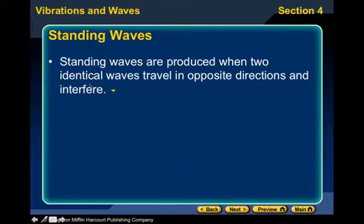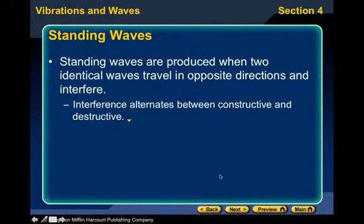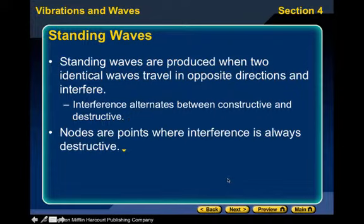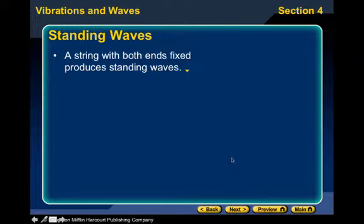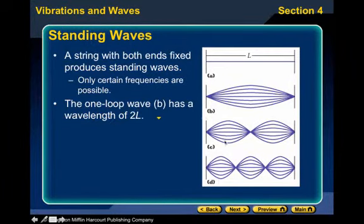Standing waves are produced when two identical waves travel in opposite directions and they interfere, and the interference alternates between constructive and destructive interference. And so nodes are points where interference is always destructive, and it looks like that point would not move. We'll see what it is. And anti-nodes are points where the nodes are at maximum displacement, where the constructive interference is occurring. So a string with both ends fixed produces standing waves. Okay? So here is the string. This is what we're going to do in our lab tomorrow. We're going to have standing waves in a vibrate... And we're going to try to figure out how many wavelengths we can get in a certain length of string.